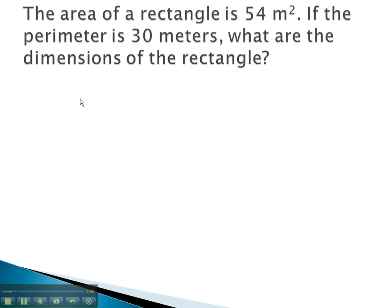For example, in this problem, we have a rectangle which has an area of 54 square meters and a perimeter of 30 meters. If we have width and length, we know that width times length equals the area, or 54. We also know the perimeter is 30, so 2 widths plus 2 lengths equals 30.